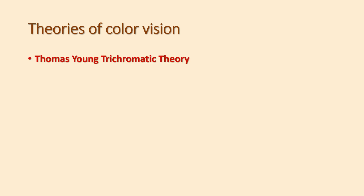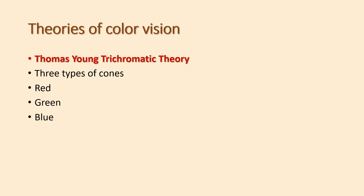The Thomas-Young trichromatic theory. According to the Thomas-Young trichromatic theory, the retina has three types of cones. Each cone gives response to one of the primary colors: red, green, and blue. The different color sensations are produced by the stimulation of various combinations of these three types of cones.